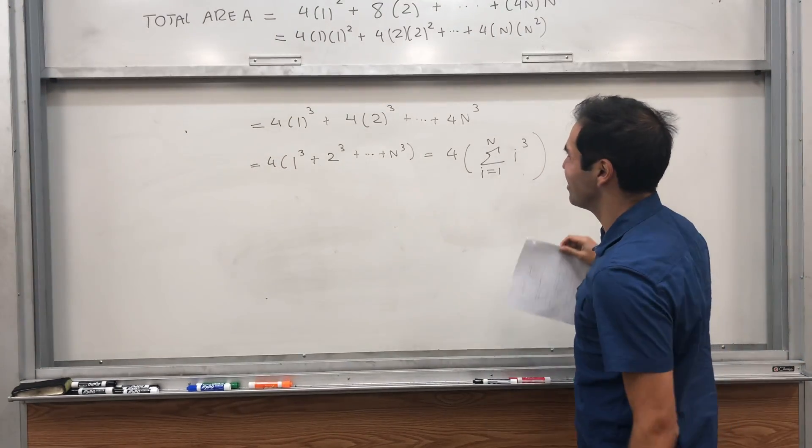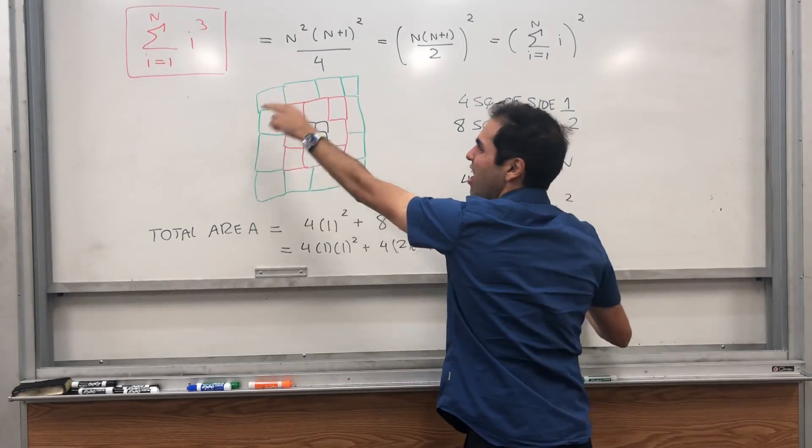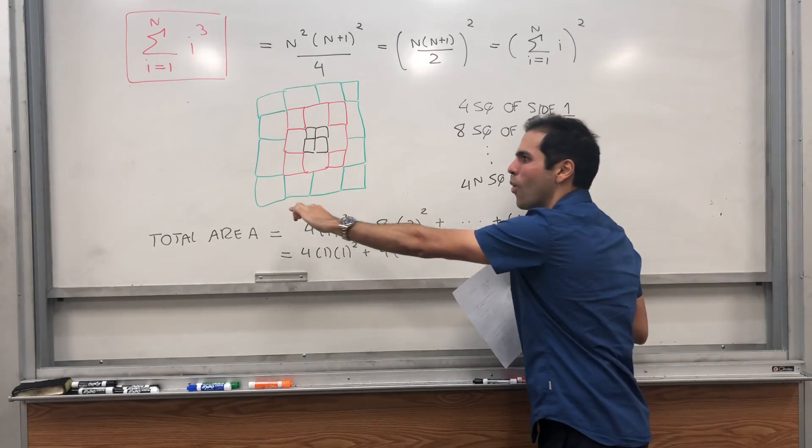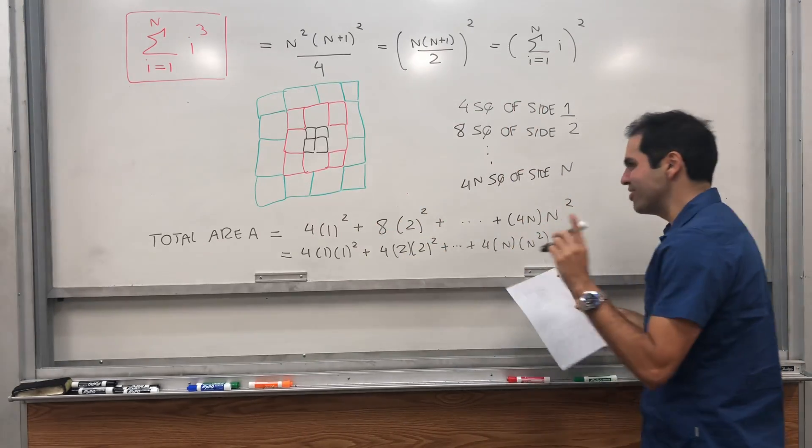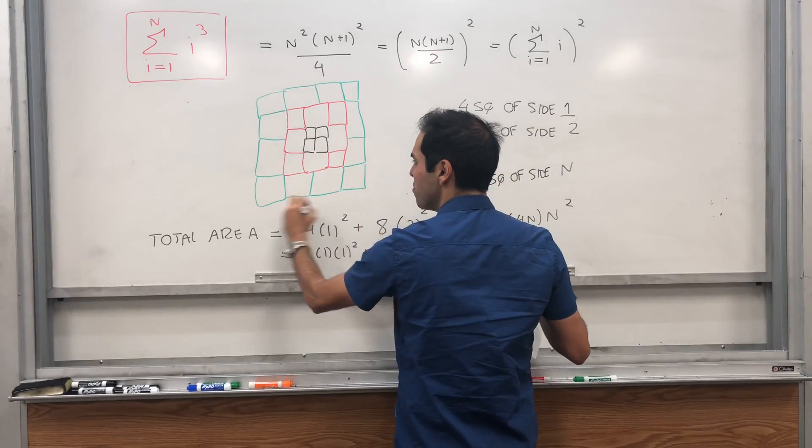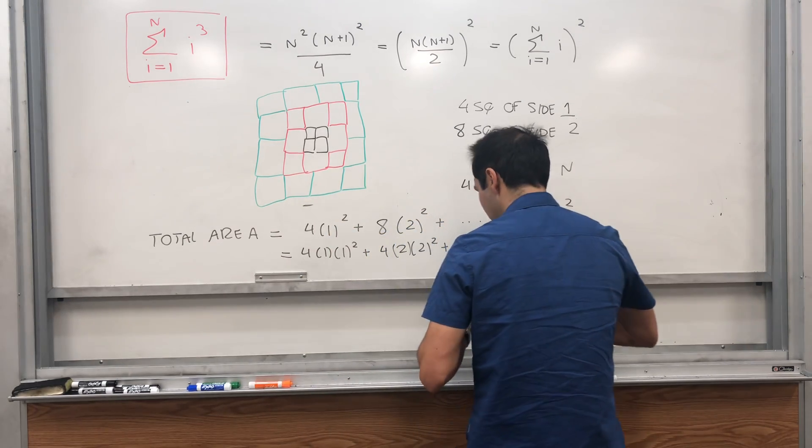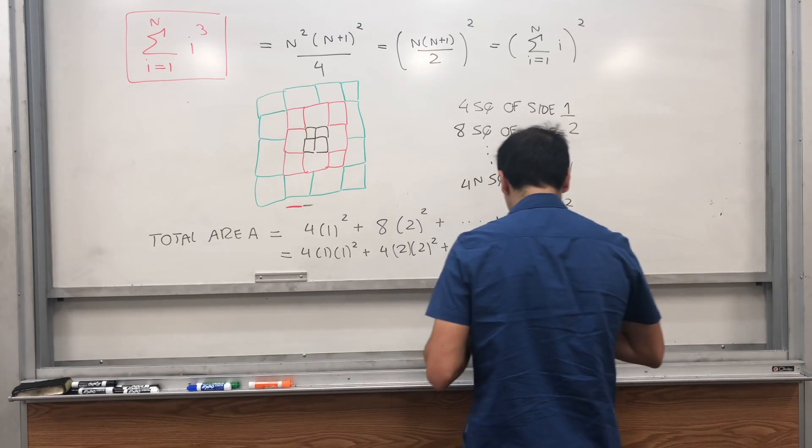On the other hand, and this is the cool thing, this geometric figure is itself a square. So you just have to calculate the total side length and square it. And notice, what makes this nice, there's this projection thing going on. Because if you project it on the axis, you get the small square, then the medium square, and then the big square.